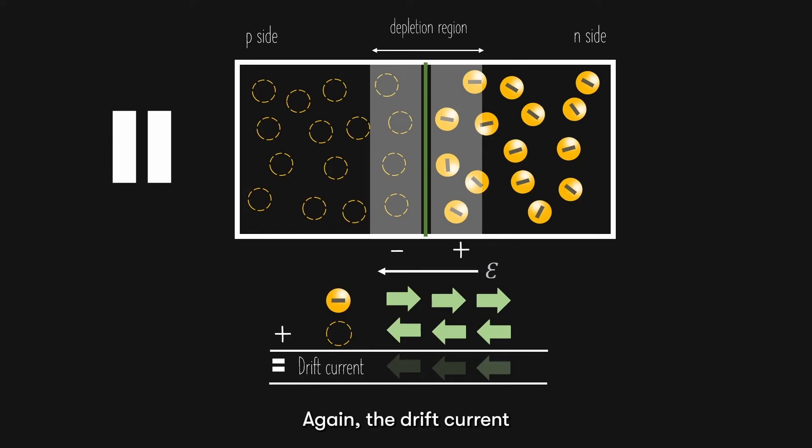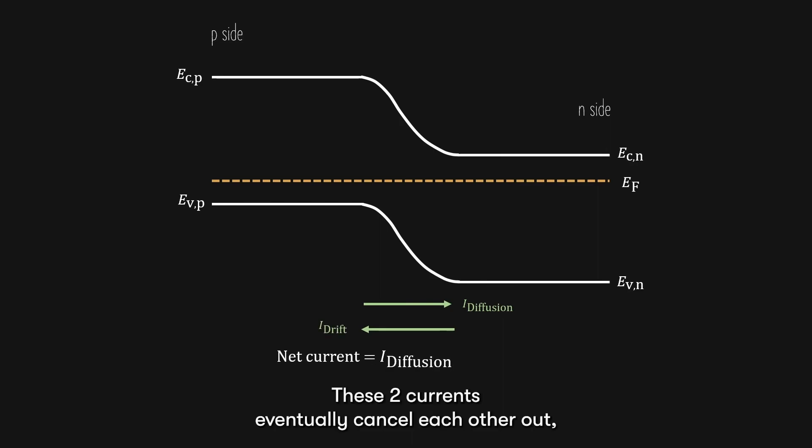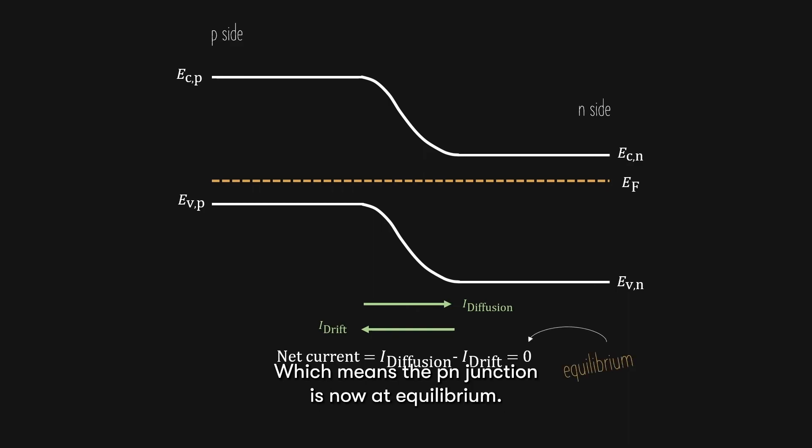Again, the drift current is opposite to the direction of electron flow, and is the result of the addition of both electron and hole drift. Now, if we present this on an energy band diagram, we have a diffusion current from the p-side to the n-side, and a drift current from the n-side to the p-side. These two currents eventually cancel out each other, resulting in zero current flow, which means the p-n junction is now at equilibrium.